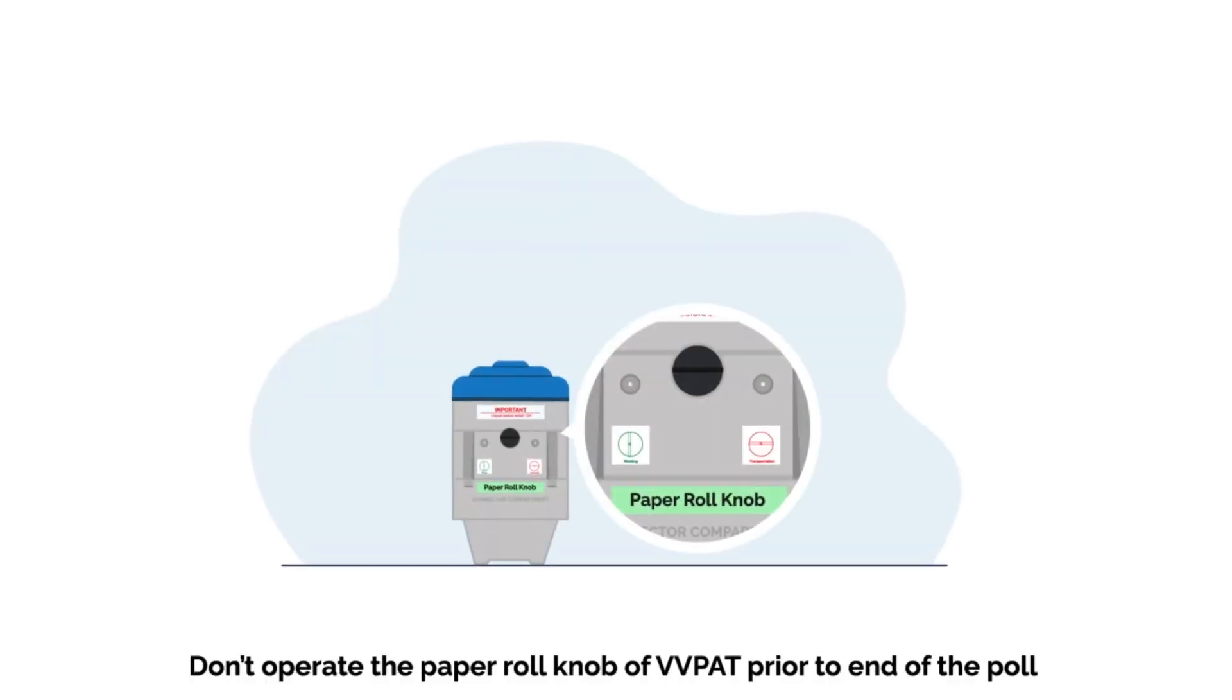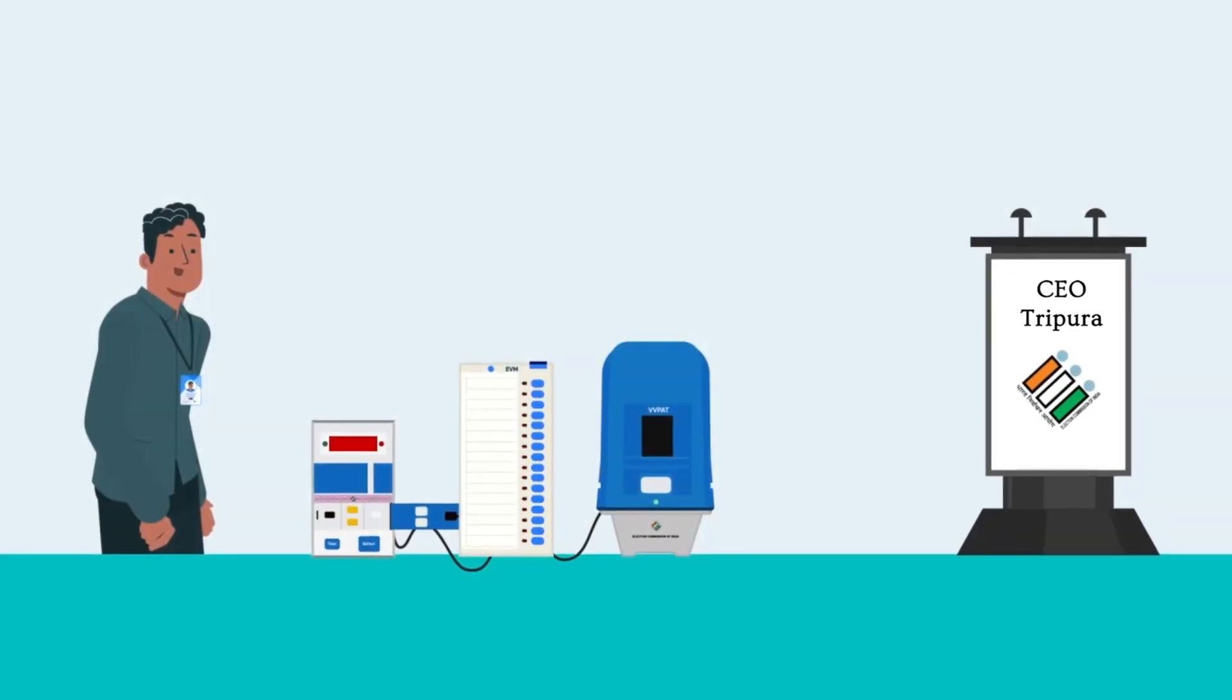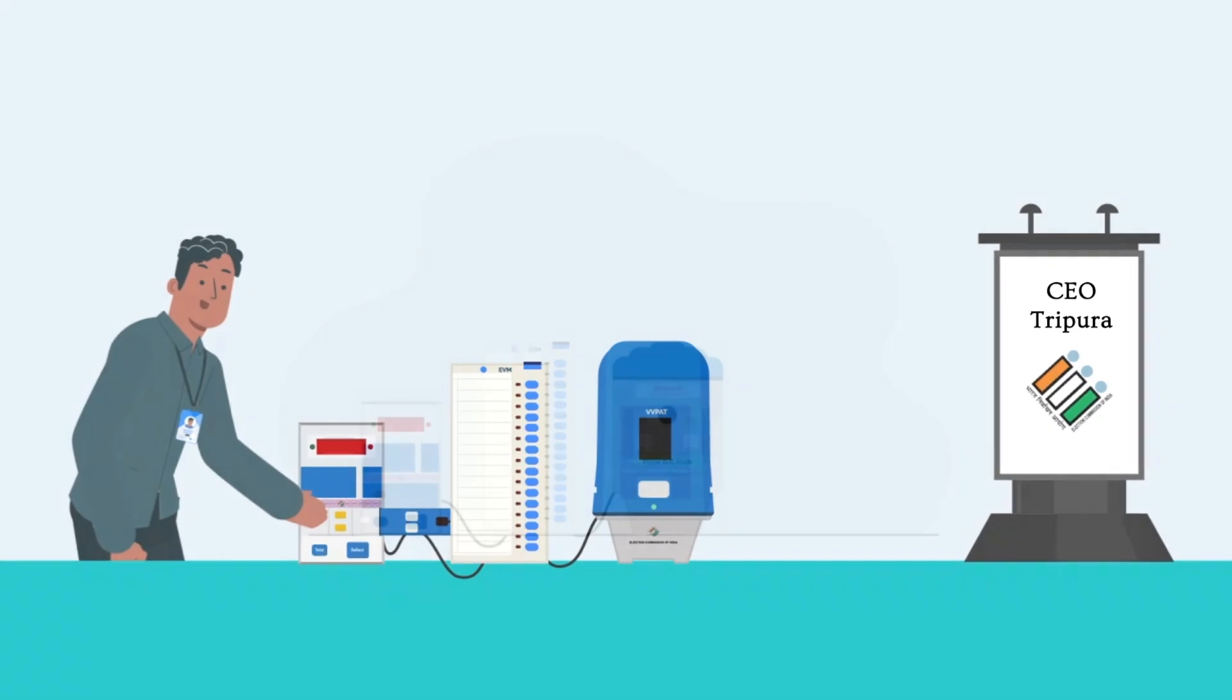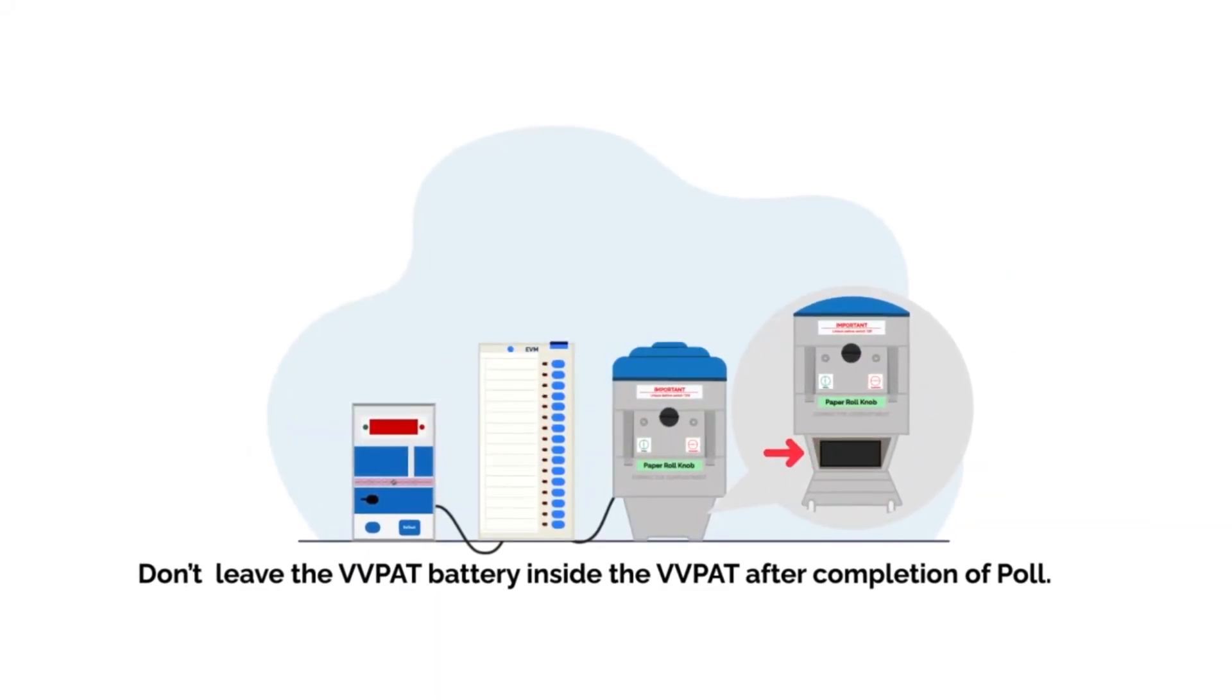Don't operate the paper roll knob of VVPAT prior to end of the poll. Don't forget to press the close button of the CU after completion of the poll. Don't leave the VVPAT battery inside the VVPAT after completion of poll.